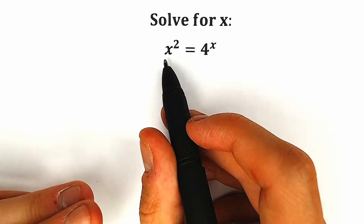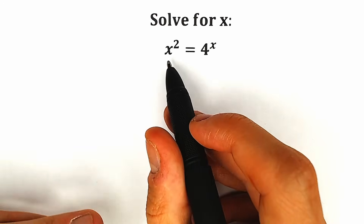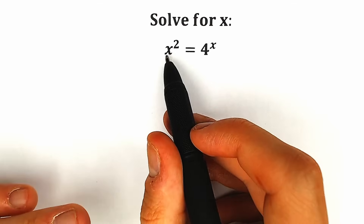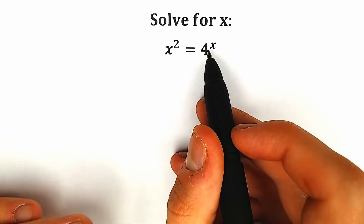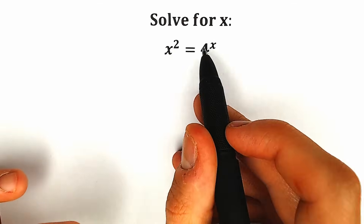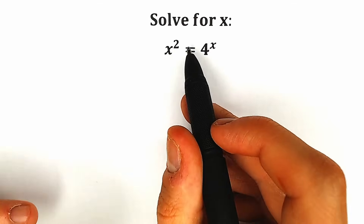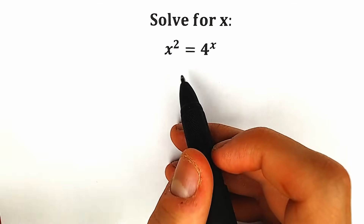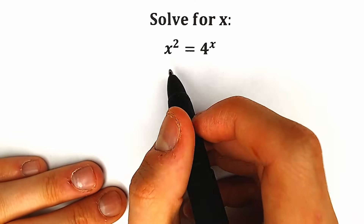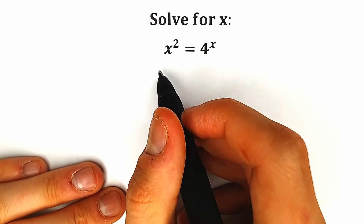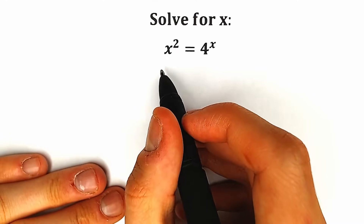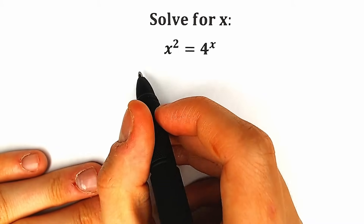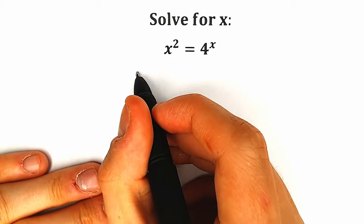How can we solve this question? First of all, we can easily guess a root by inspection — it looks like for x², 4 to the x, maybe we can easily find x, but that's not how it works. I suggest this method: let's apply natural log on both sides.